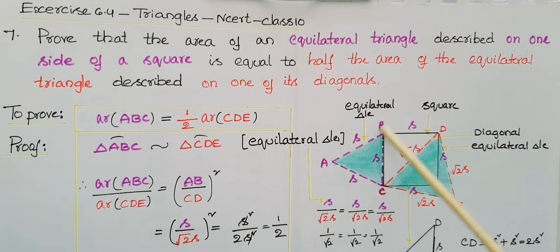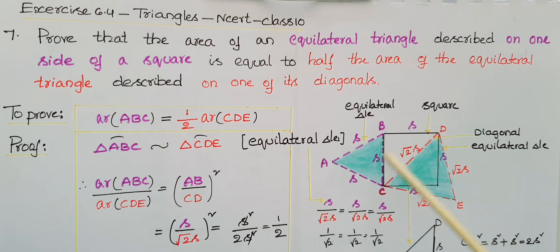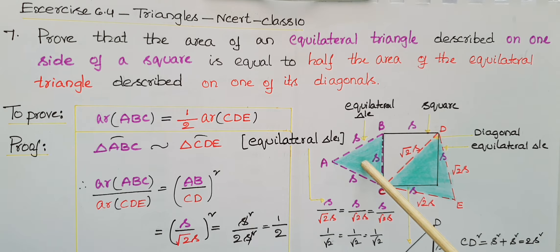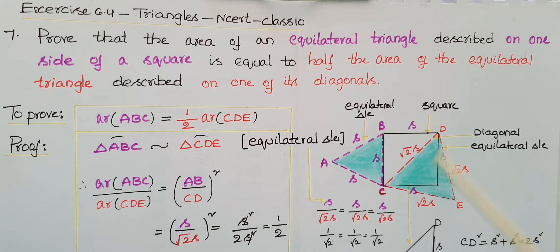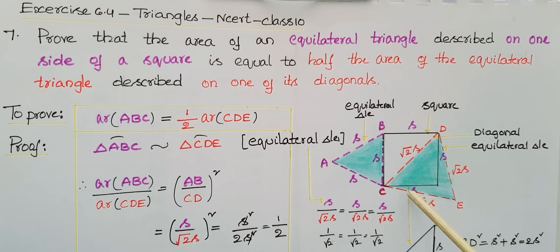Here, ABC is one equilateral triangle described on one side of the square. The other equilateral triangle is described on one of its diagonals — this is the diagonal CD of the square. So the other equilateral triangle is CDE, constructed on diagonal CD. The side of equilateral triangle CDE is √2S.